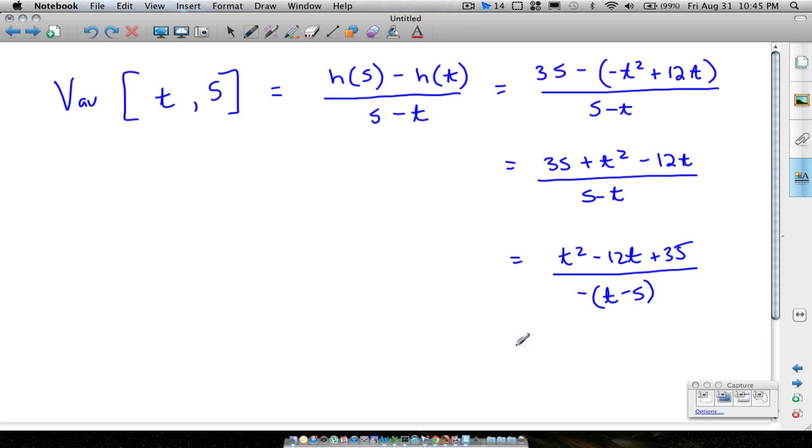If we factor this, this will be t minus 7, t minus 5 up top. And then this negative, I'm going to put up here at the top, leaving me with just the t minus 5 at the bottom, so the t minus 5 is cancelled. So therefore, our function is now, or our formula for finding any average velocity from any time t up to 5 seconds.